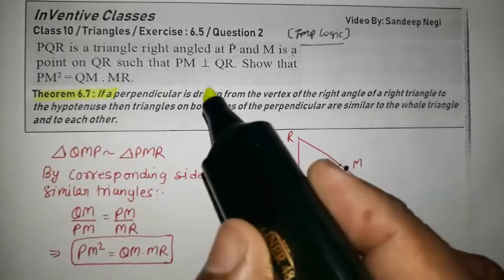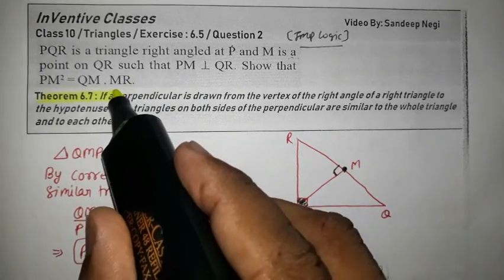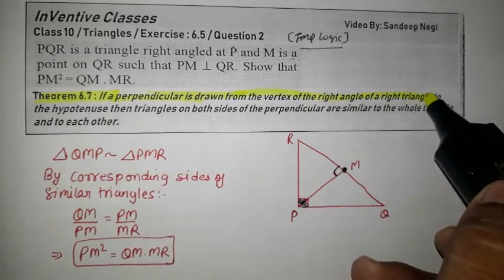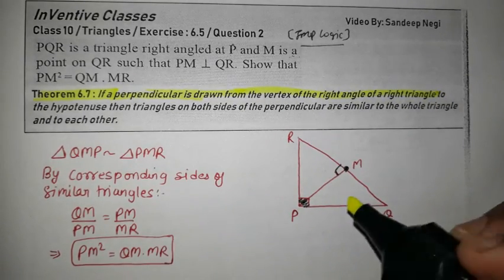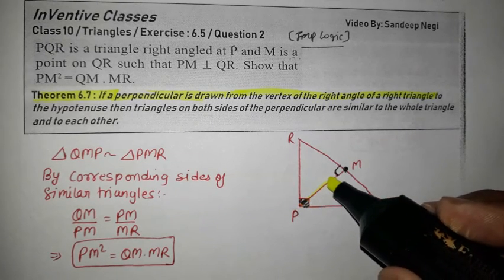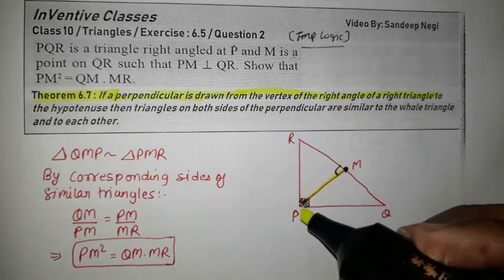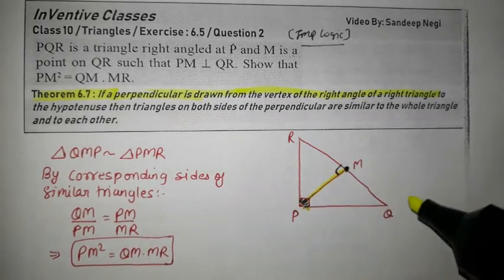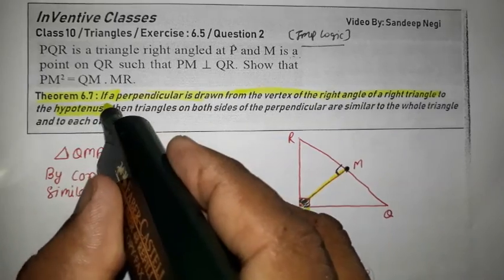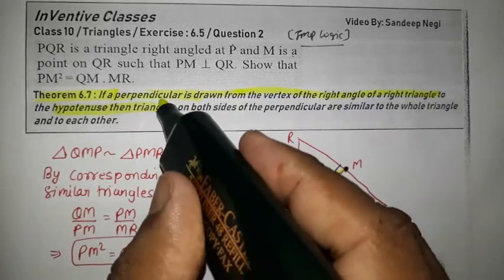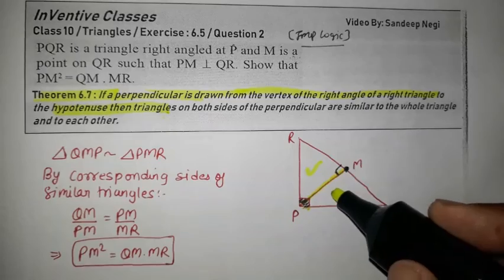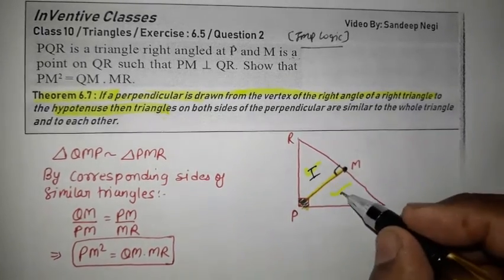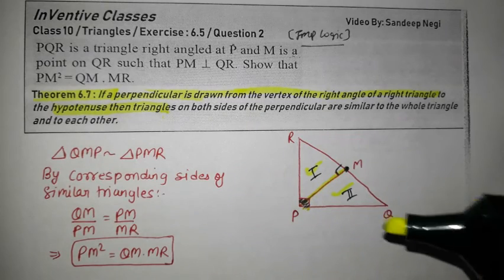Theorem 6.7. What does this mean? If a perpendicular is drawn from the vertex of a right angle triangle to the hypotenuse...